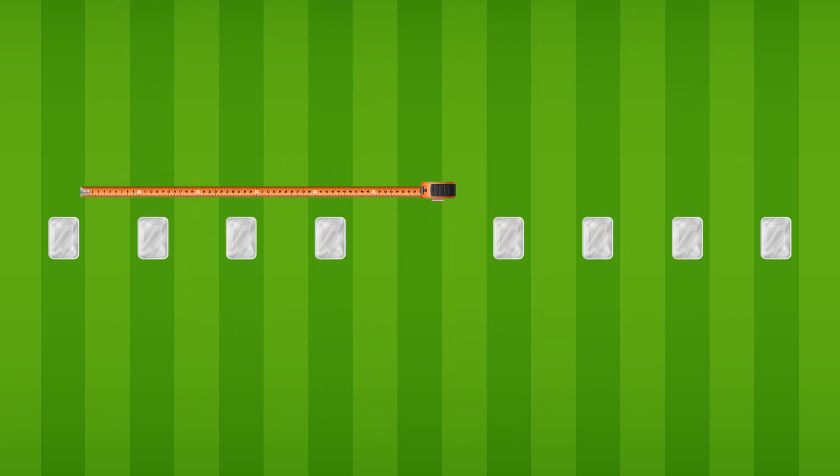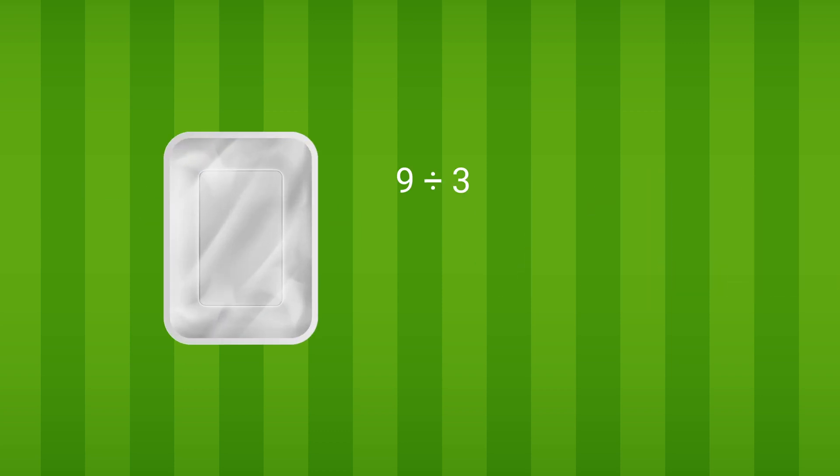Measure the position of each tray, then weigh and note down the amount of fertilizer received in each individual tray, but divide this weight by the number of passes made to calculate the weight of fertilizer received in each tray for one pass. The next step is to convert this into grams per square meter by dividing the amount of fertilizer received in each tray by the area of the tray.